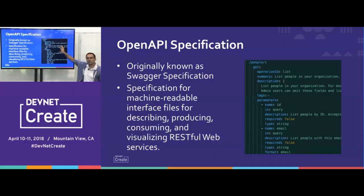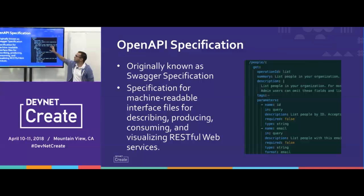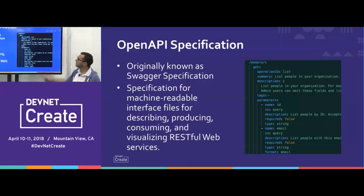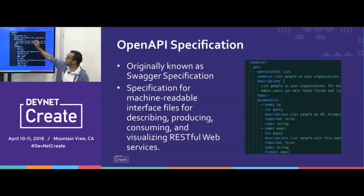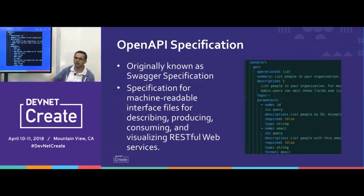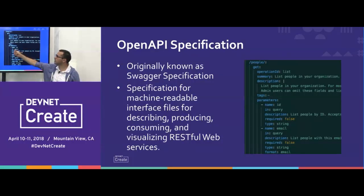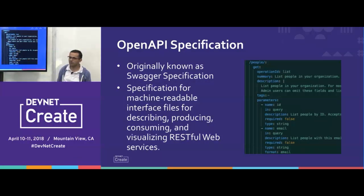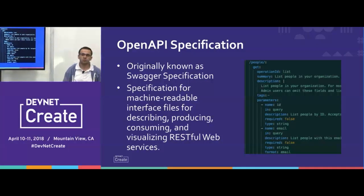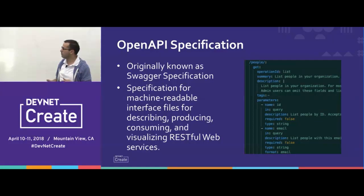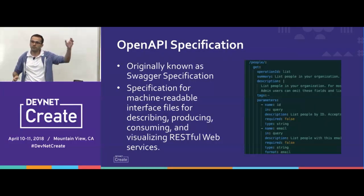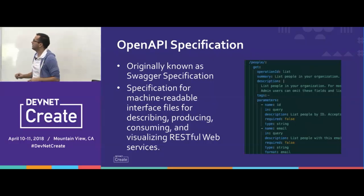This is a specification I created for the Spark API. For example, you get the people endpoint, the operation — which is get information — the operation ID, the summary, the description, and then the parameters you'll send. For example, the name is ID, it's in the query, has a description, whether it's required or not, and the different kinds of things you can have. It's fairly easy for developers to define this description and then give that to front-end developers, back-end developers, and they can all work from that specification.